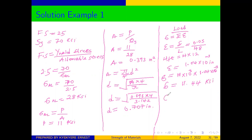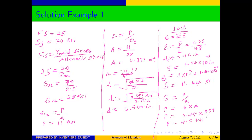We can see that stress equals force over area, and we had already determined our area as 0.393 square inches. So the force is equal to the stress times the area: force = 11.44 × 0.393, which gives us a force of 4.5 kips. With this, we have determined all the required quantities from the question.